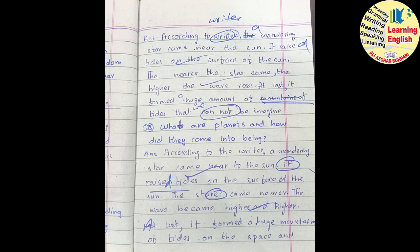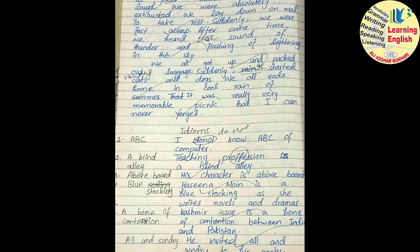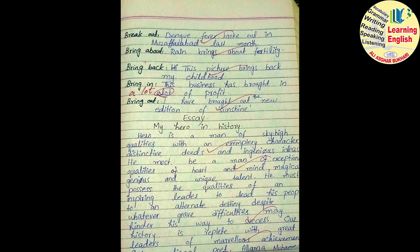ہمارے ہاں 'cannot' کو الگ الگ — 'can' الگ اور 'not' الگ — لکھتے ہیں، حالانکہ اسے جوڑ کے لکھنا چاہیے۔ جبکہ 'could not'، 'would not'، 'should not'، 'do not'، 'does not'، 'did not' کو عام طور پر students جوڑ دیتے ہیں، حالانکہ انہیں الگ الگ لکھنا چاہیے۔